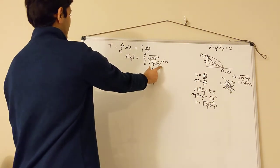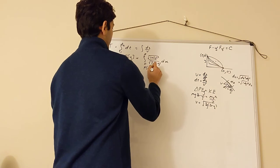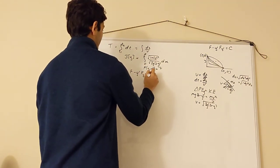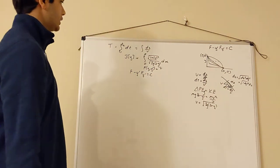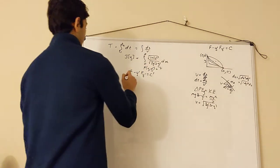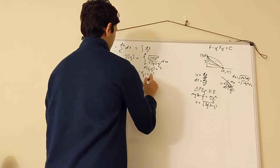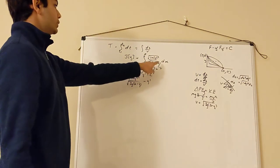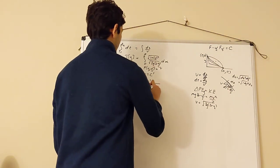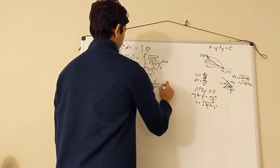We can use the Beltrami identity because the integrand does not depend on x explicitly — there is only y and y' here. So we set f(y, y') equal to that integrand. Now we want to write f minus y' times the partial derivative of f with respect to y' equals some constant. I'll call it c' because I'm going to reserve c for a bit later. So let's plug this in directly. We have √(1 + y'²) / √(2g(b − y)) minus y' times the derivative of f with respect to y'. Holding y constant and taking the derivative with respect to y' gives y' divided by √(1 + y'²).